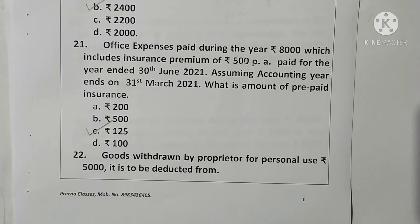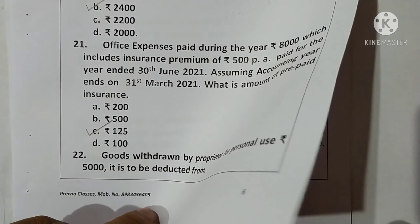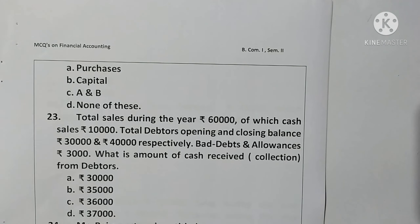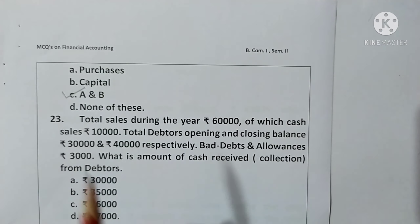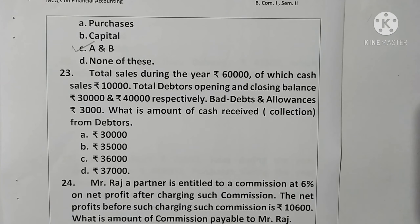Question 22: Goods withdrawn by the proprietor for personal use of rupees 5,000 is to be deducted from both purchases and capital — option C (A and B both) is correct.